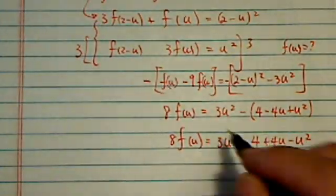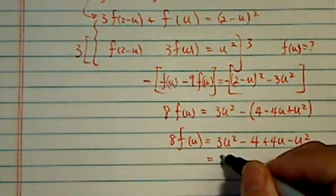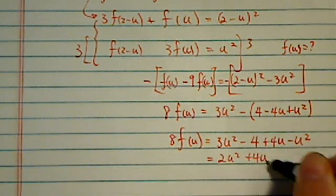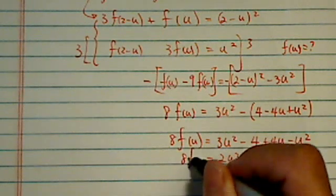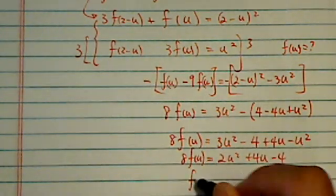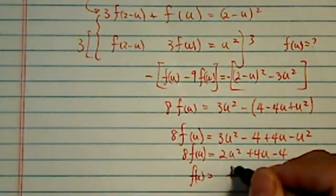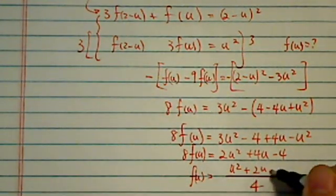And we'll have a common factor of 2, it looks like it's coming up. 2u² + 4u - 4, 8f(u). So f(u) is equal to a quarter on the bottom of u² + 2u - 2.